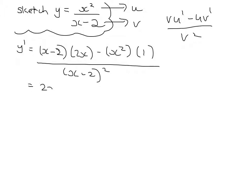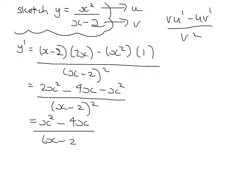So that's 2x squared minus 4x minus x squared over x minus 2 all squared. x squared minus 4x over x minus 2 all squared.